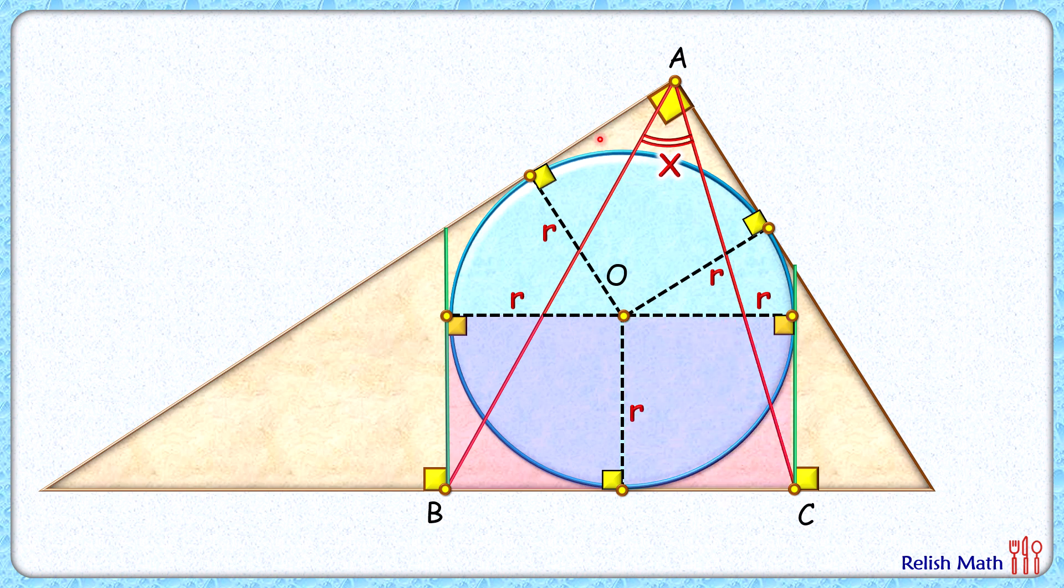Let's draw the diagonals of these squares. That is, we are drawing BO here, OC, and OA.